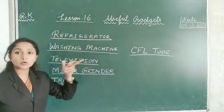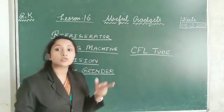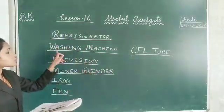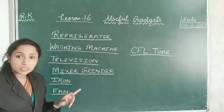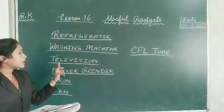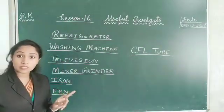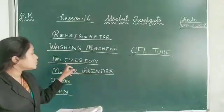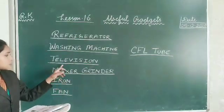So refrigerator is used to keep vegetables, to store vegetables and fruits. Next, washing machine is used to clean the clothes, to wash the clothes. Next, television is used to watch movies, cartoons and news, TV series.